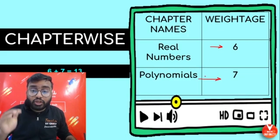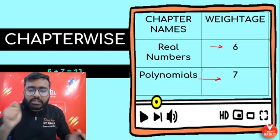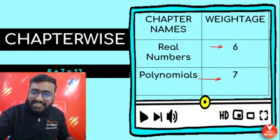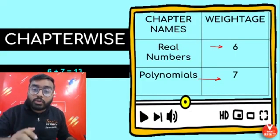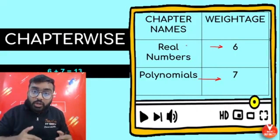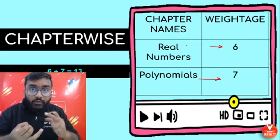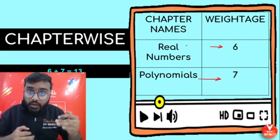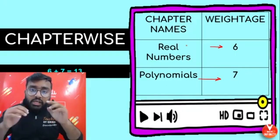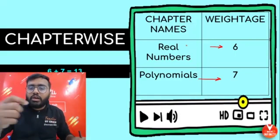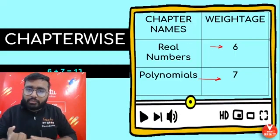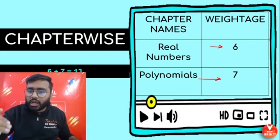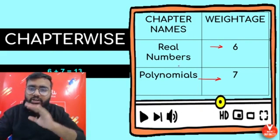Polynomials carry 7 marks. In Real Numbers, Euclid's algorithm is gone from the reduced syllabus. Focus on HCF, LCM, and the concept of terminating decimals — where 2 to the power n and 5 to the power n are used. These have very high chances of appearing. In Polynomials, quadratic polynomial is very important, and it will help you in Quadratic Equations. So far we've covered 13 marks.